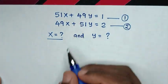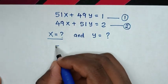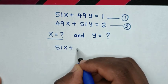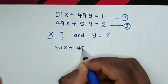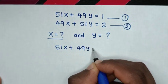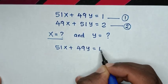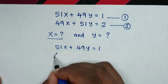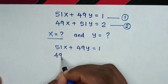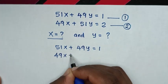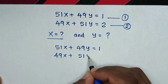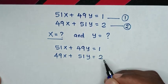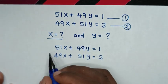Now, from equation 1, which is 51x plus 49y is equal to 1, and equation 2, which is 49x plus 51y is equal to 2.